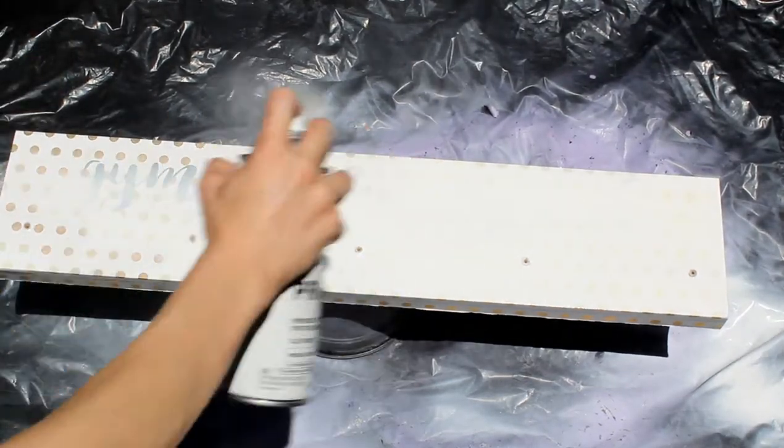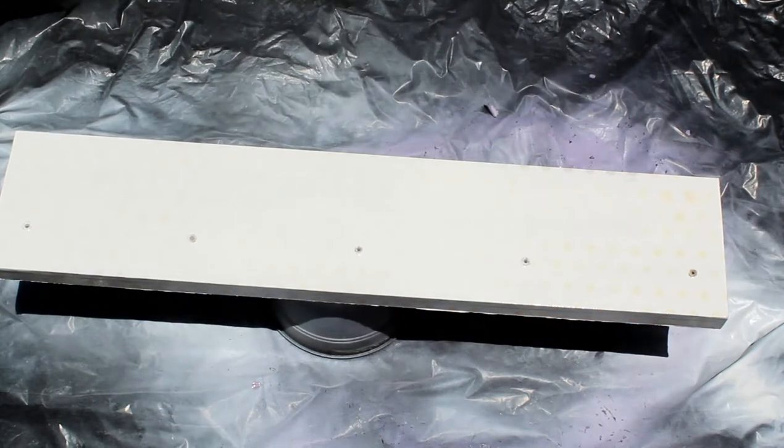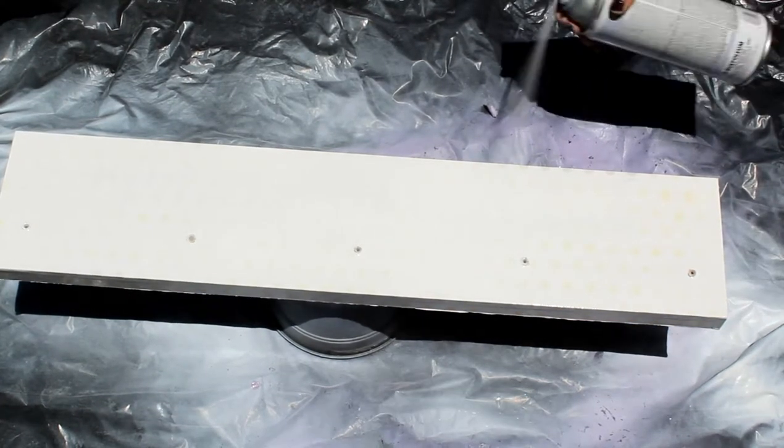The first thing I did was spray my board down with some white spray paint primer. I let this sit and dry which didn't take long thanks to the Texas sun.